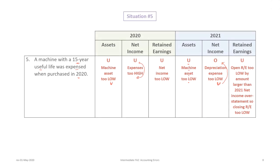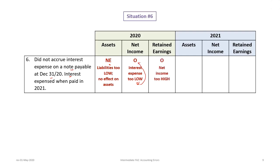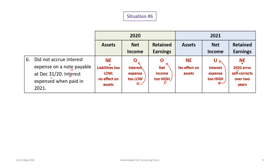Final situation: the company did not accrue interest expense on a note payable in 2020 — the interest was expensed when paid in 2021. In 2020, no effect on assets, but net income is overstated because interest expense is too low, and retained earnings are overstated. In 2021, no effect on assets, but interest expense is overstated — it should have been accrued in 2020 — so net income is understated. However, retained earnings show no effect, as the 2020 error self-corrects over two years.